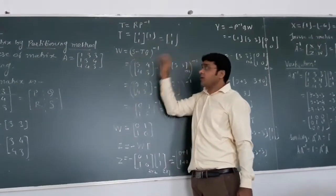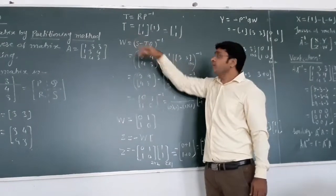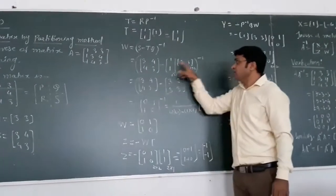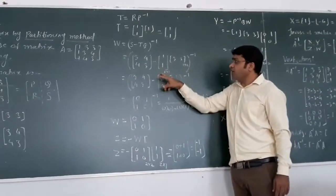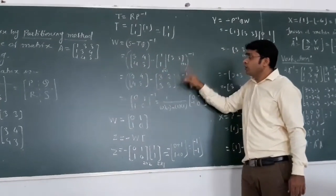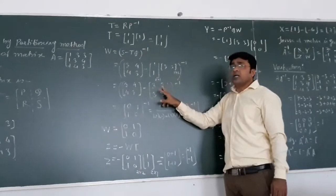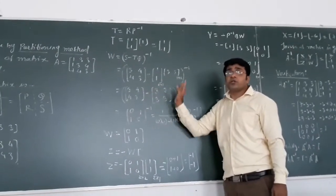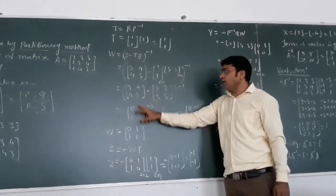Next, we find W, which is S minus T·Q. S is the 2 by 2 matrix with values 3, 4, 4, 3. T is [1, -1], which is of order 2 by 1, and Q is [3, 3], which is of order 1 by 2. Their product gives a 2 by 2 matrix. Multiplying row by column: 1×3=3, 1×3=3, -1×3=-3, -1×3=-3. Then subtracting: 3−3=0, 4−3=1, 4−3=1, 3−3=0.